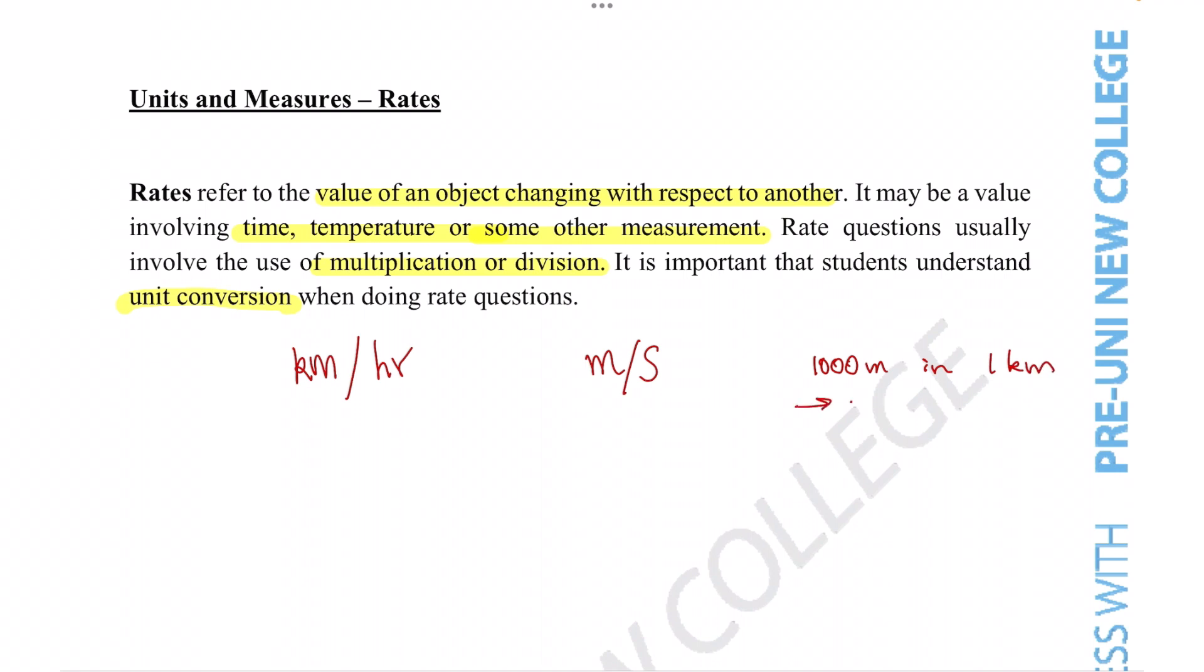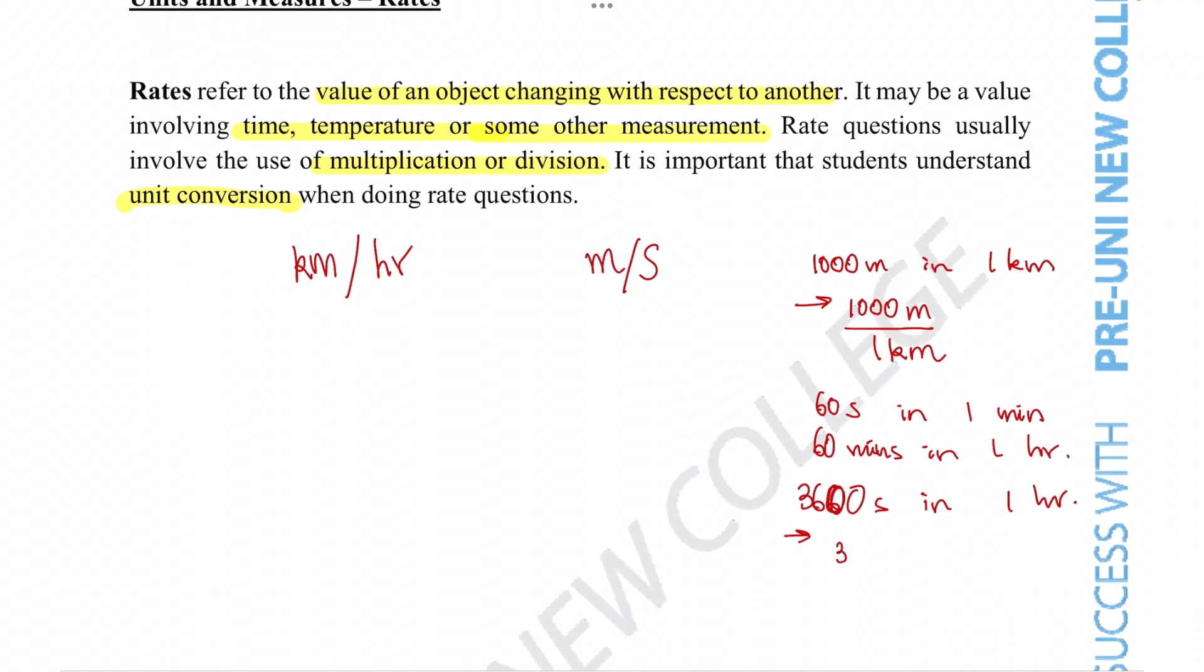This can be represented as 1000 meters per one kilometer. There are 60 seconds in one minute, 60 minutes in one hour. So in total, there are 3600 seconds in one hour, which you can represent as 3600 seconds per hour.